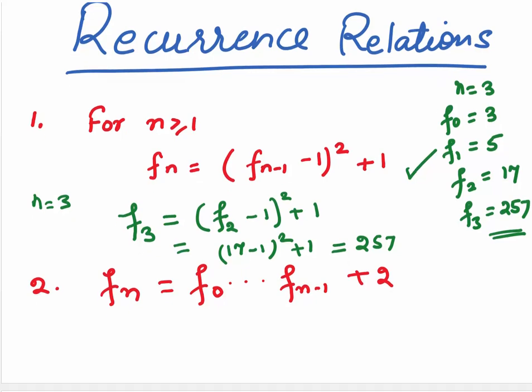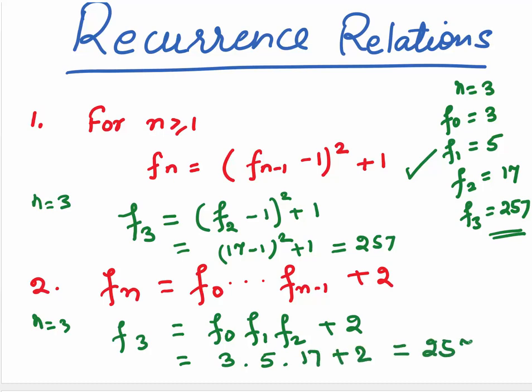Come to the second relation. Here, Fn is nothing but F0 into F1 etcetera into F of n minus 1 plus 2. Again, if I take n to be 3 because for explanations, smaller numbers are better, we will be finding F of 3. Now, F3 would be nothing but F0, F1. How far will we go? Up to F3 minus 1, which is F2. So, this is then added to 2. Now, substitute the values. You see, your F0 is 3, F1 is 5, F2 is 17 plus 2. You will get 257, which is F3.